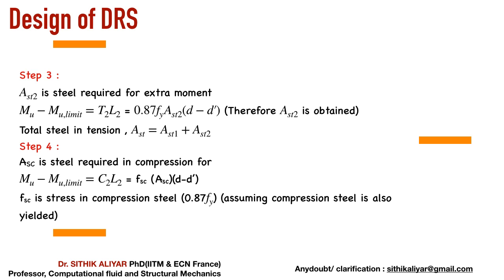So AST total = AST1 + AST2. Finally, you find ASC — the extra steel required in the compression side. MU − MU_limit = C2 × L2 = FSC × ASC × (D − D′), where FSC = 0.87 × FY (unless stated otherwise). You know MU − MU_limit, FY, D, and D′ — bring everything to one side and you get ASC. Now you know AST1, AST2, and ASC — this is the number of bars required to handle the extra moment, enabling you to handle the full MU value. That is the design.